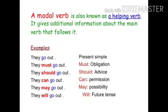For example: 'They will go out' — 'will' is used to show future tense. 'They may go out' — 'may' is used for possibility. 'They can go out' — 'can' is used for permission. 'They should go out' — 'should' is used for advice.